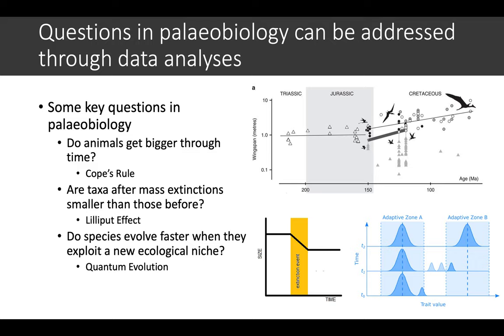Or do species evolve faster when they exploit a new ecological niche, such as quantum evolution that George Simpson postulated almost 75 years ago?